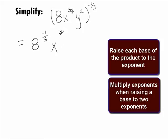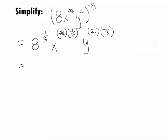So when we do that, we will get 8 raised to the negative 1 over 3 power, times x raised to the 3 over 4 times negative 1 over 3 power, times y raised to the 2 times negative 1 over 3 power. Multiplying the fractions and the exponents, we get 1 over 8 raised to the 1 over 3 power, times x raised to the negative 1 over 4 power, times y raised to the negative 2 over 3 power.